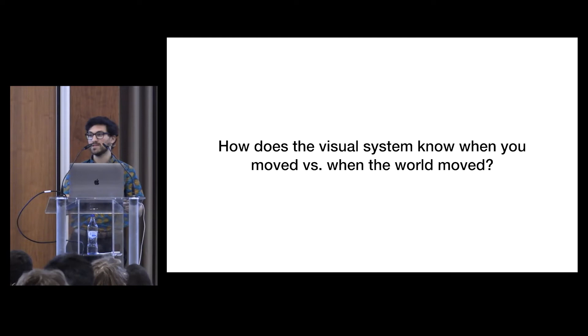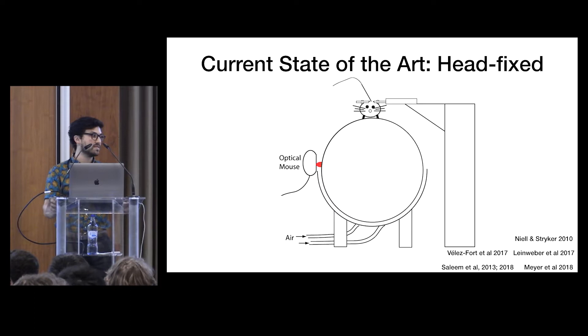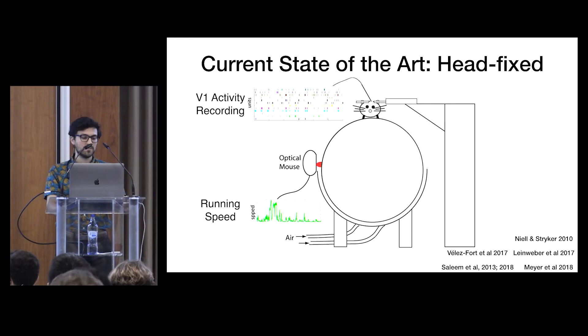And in previous rodent studies, movement-related signals have been observed in primary visual cortex of head-fixed mice that were for the most part either free to run or not run. These experiments were done in setups such as this one from Chris Niell's lab where the researchers recorded V1 activity and running speed simultaneously. And the basic finding from this kind of work is that V1 cells modulate their firing rates when the animals run. And there's a lot of really good work out there on this topic, and head fixation is a really useful tool. But we wanted to see if and how V1 activity is modulated in freely moving rodents.